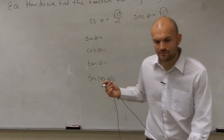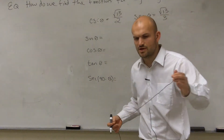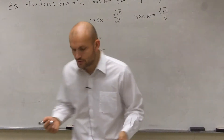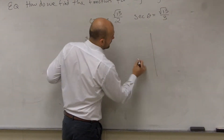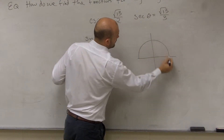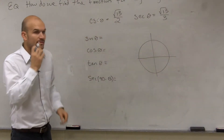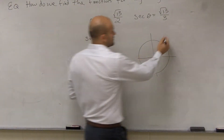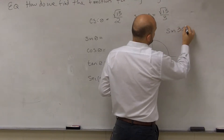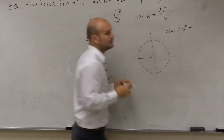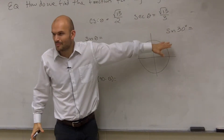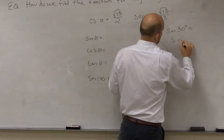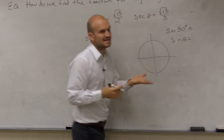Let's go back and review what we've previously talked about when looking at sine, cosine, and tangent. If you remember, when we were looking at the unit circle, we would talk about certain types of angles. For example, sine of 30 degrees — do you remember what the sine represented of an angle? If I said sine of theta, what did sine of theta represent?